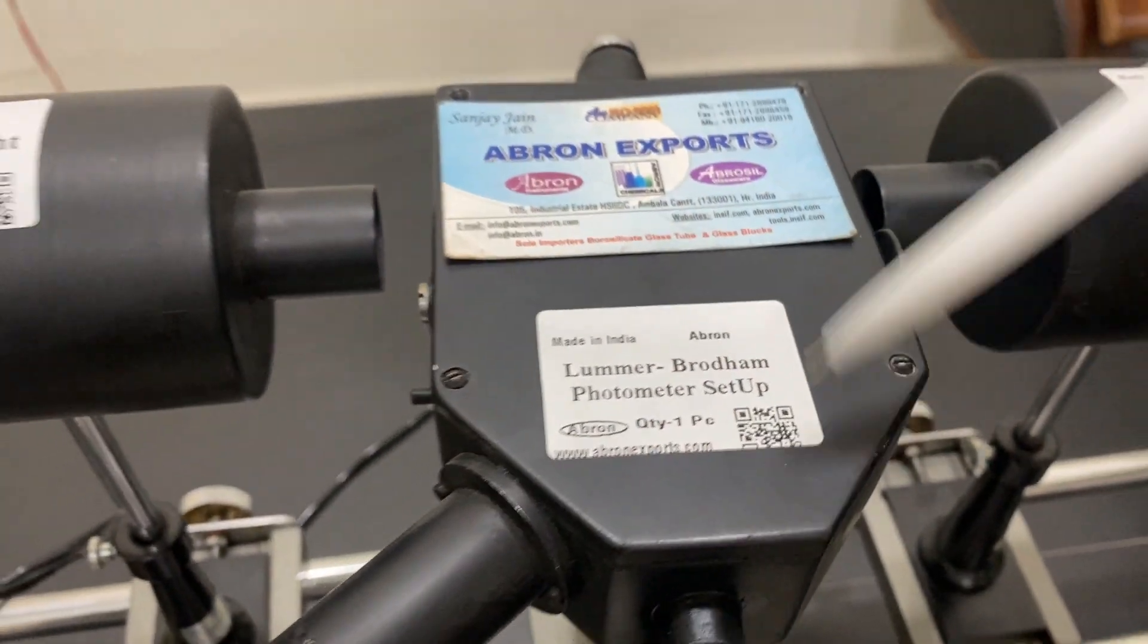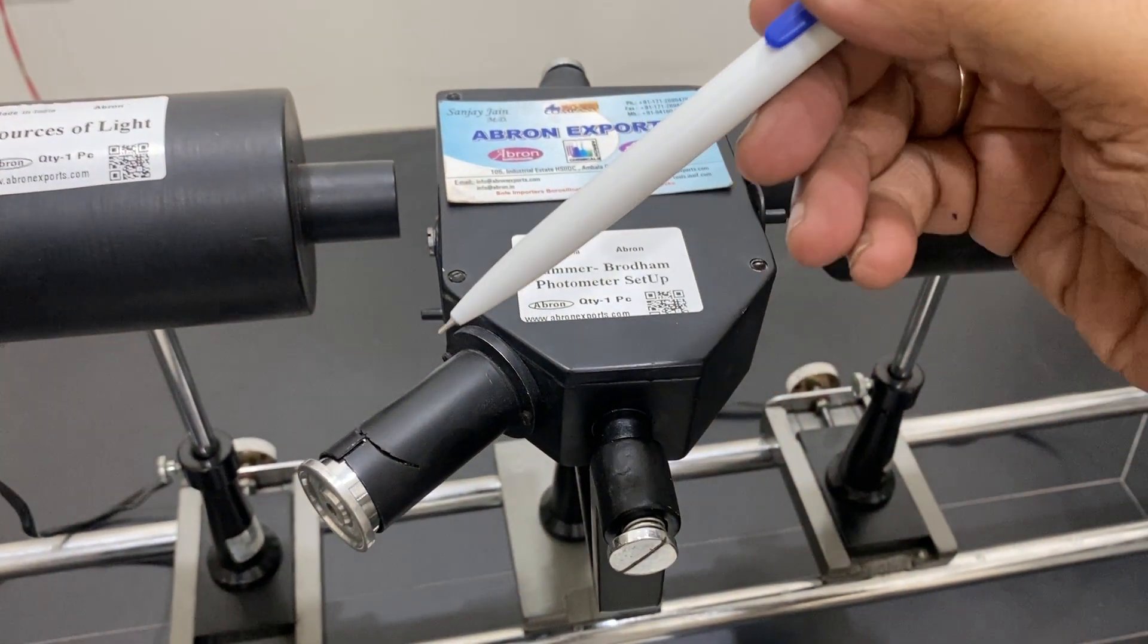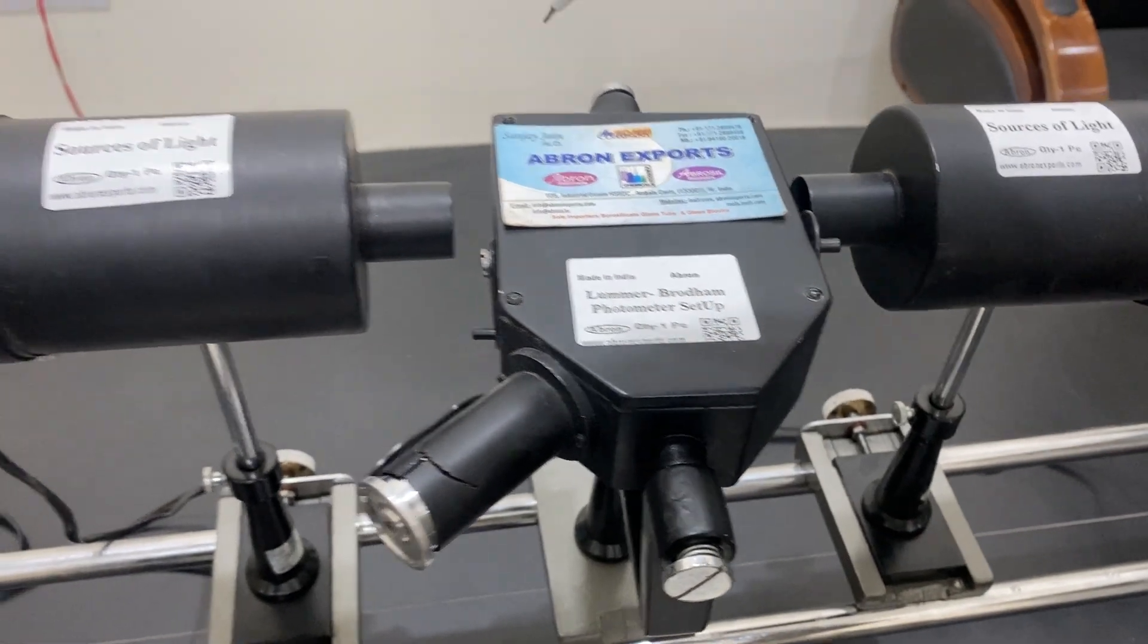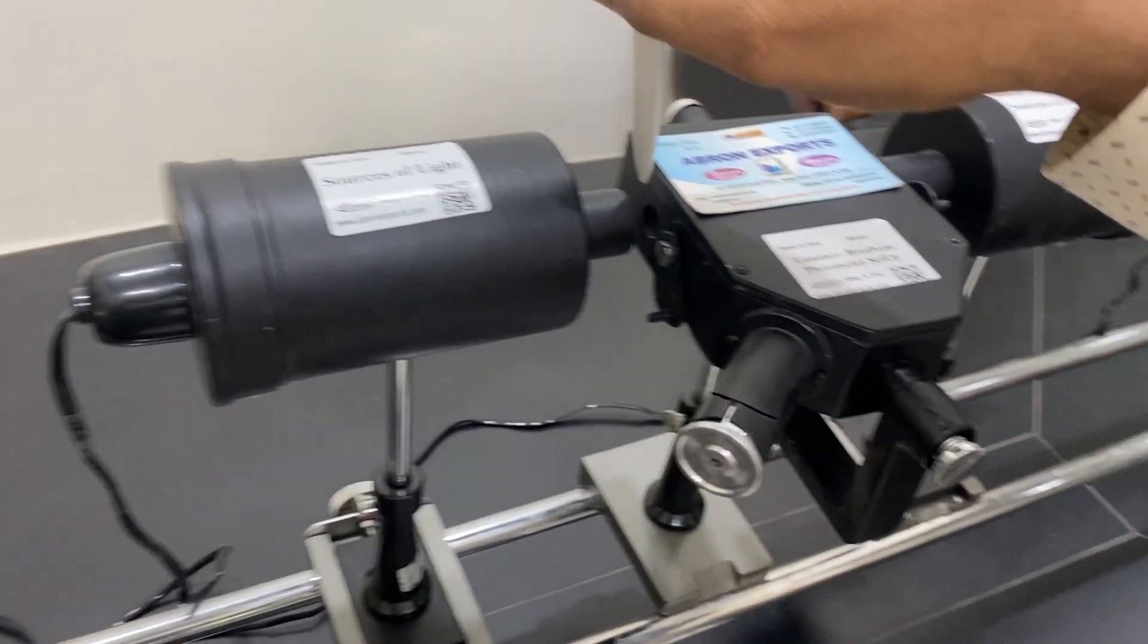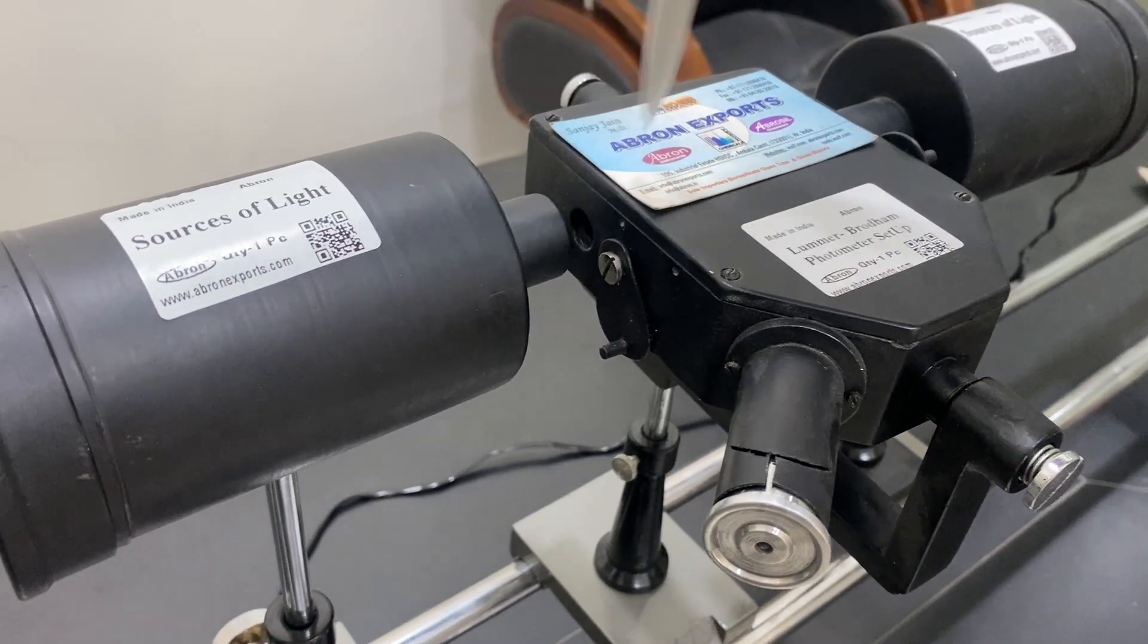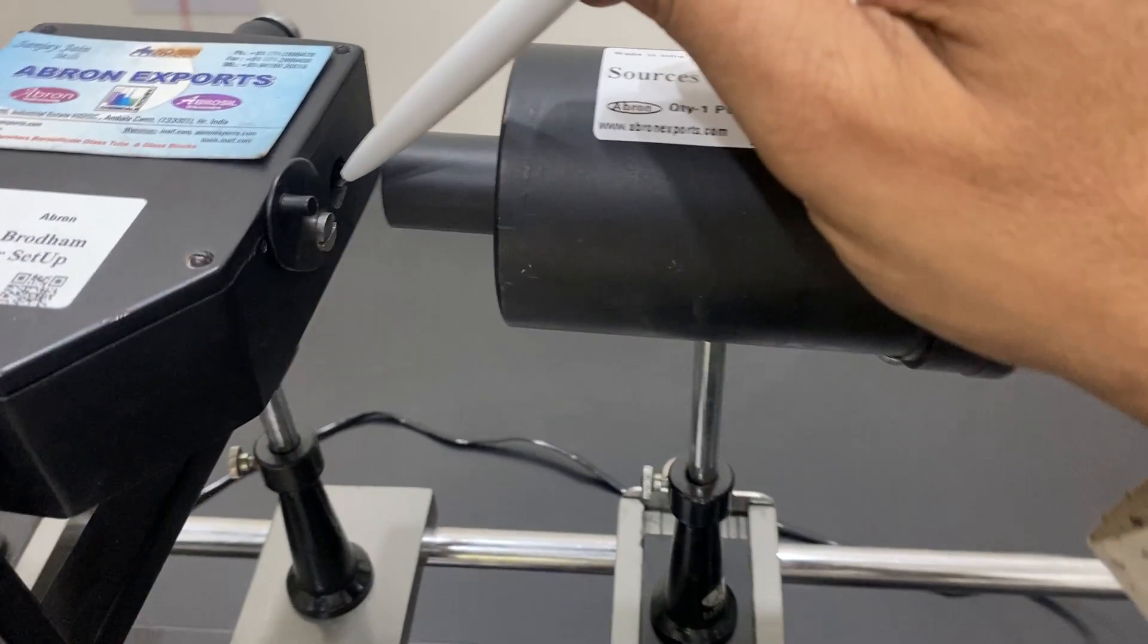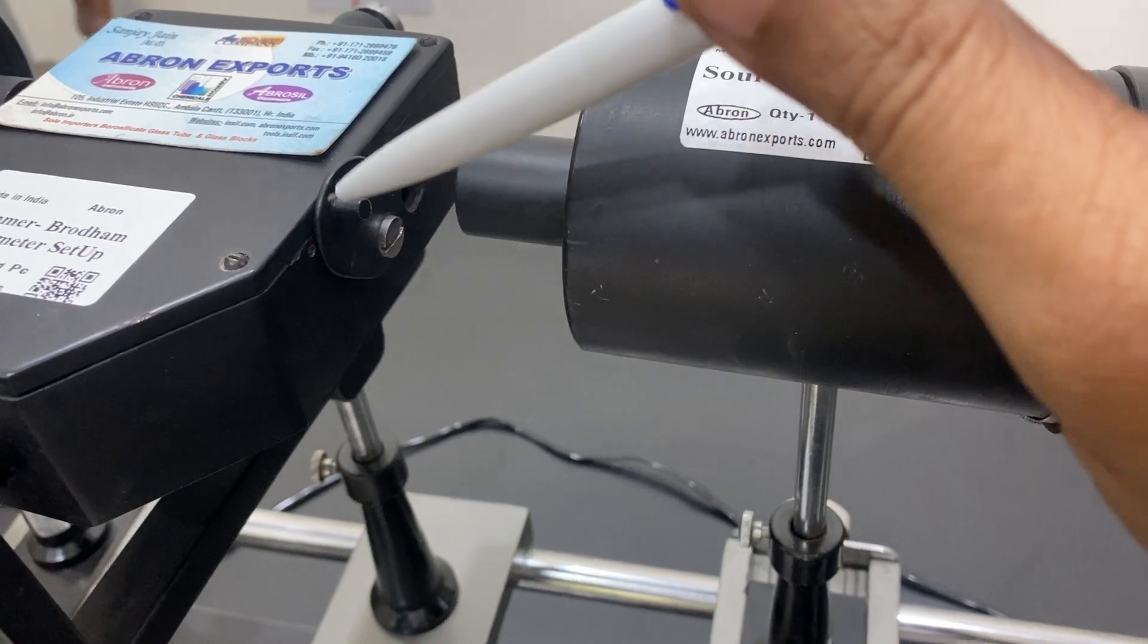This center part is a Lummer-Brodhun Photometer Setup. This is an eyepiece and it has two openings - one on this side with a window that opens, and another is on the other side.